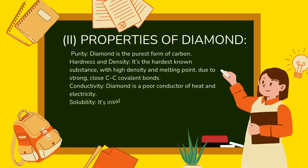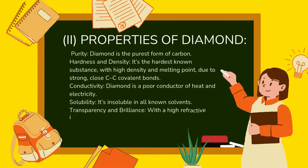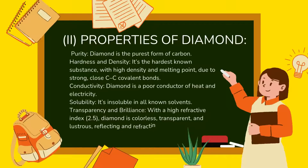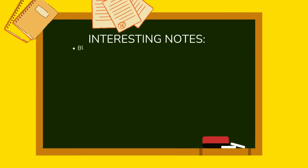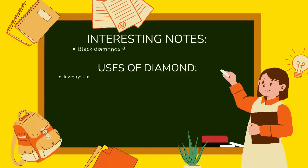Conductivity: diamond is a poor conductor of heat and electricity. Solubility: it is insoluble in all known solvents. Transparency and brilliance: with a high refractive index of 2.5, diamond is colorless, transparent, and lustrous, reflecting and refracting light brilliantly. Interesting note: black diamonds are also called carbonado, and among all diamonds, black diamonds are the hardest.